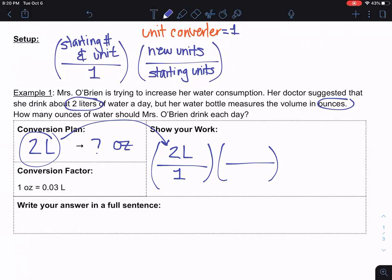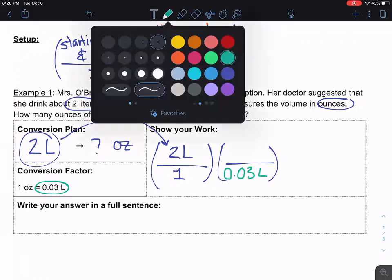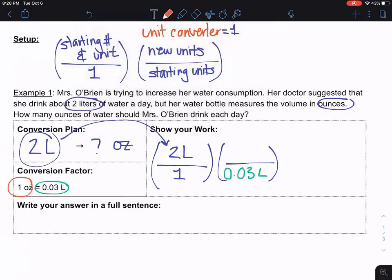And then I'm going to take my conversion factor and I'm going to put one part of it on the top and one part of it on the bottom. So here I'm going to take the part that's liters, my starting units, and I'm going to put that on the bottom. And then I'm going to take my part that's ounces, my new units, the units I want, and I'm going to put that on the top.